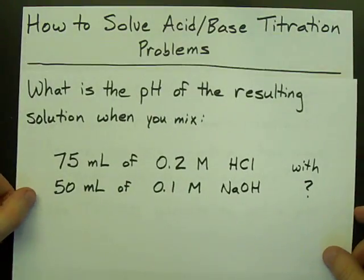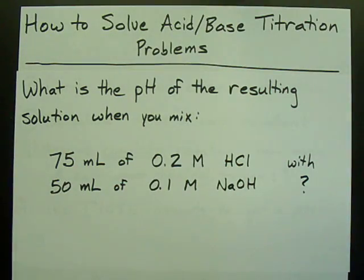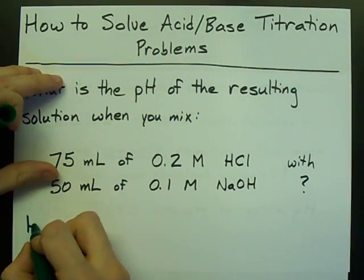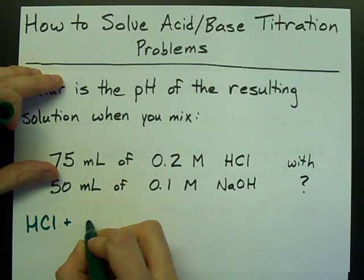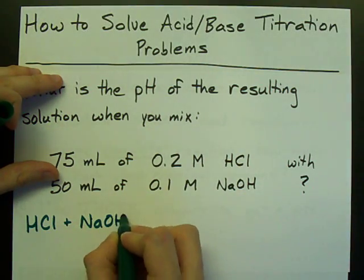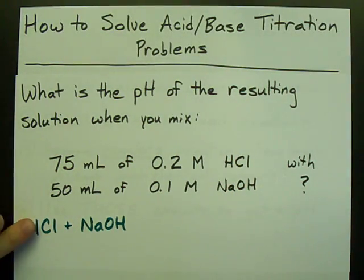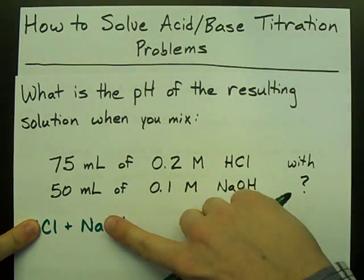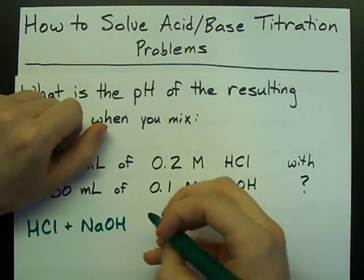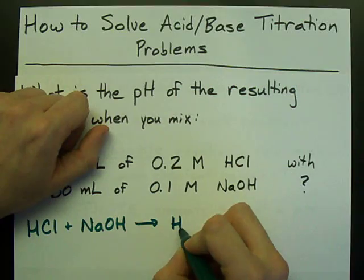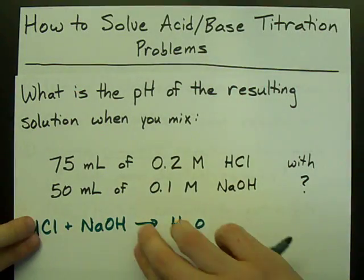Write a balanced chemical reaction. We have HCl and NaOH together. HCl plus NaOH. This is an acid-base neutralization. The H from one reacts with the OH from the other, giving us water. And what's left over?